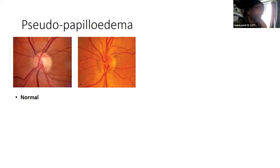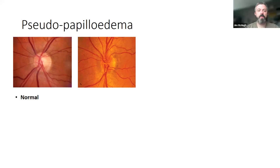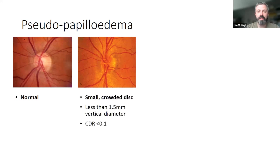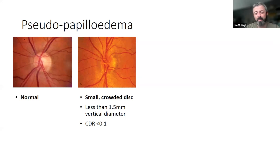One of the edges looks perhaps slightly blurred — edges look slightly raised and blurry. And the reason is it's a really tiny disc. This is a crowded disc. Crowded discs with no cups always look a bit swollen, and they're often a little bit lifted up. If you look at them in profile on OCT they're often a little bit elevated. A disc is noticeably small if it's less than about one and a half millimetres, and it has no cup.